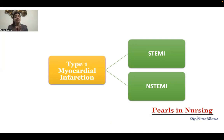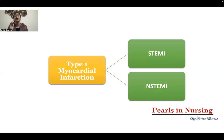ST-segment elevation myocardial infarction can be further classified into anterior wall MI, posterior wall MI, lateral wall MI, septal MI, or inferior wall MI. These are the further classifications of STEMI, and there will be another video talking in detail about all these types of ST-segment elevation myocardial infarction.